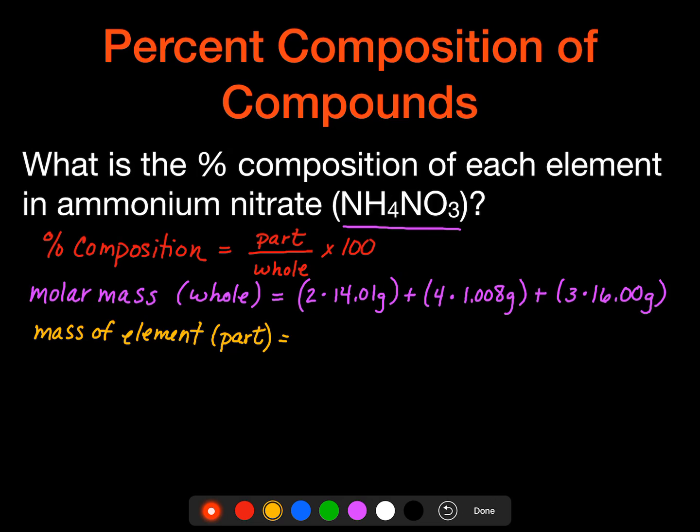Two times 14.01 is going to give us 28.02 plus 4.032 grams for hydrogen. And finally, we're going to add oxygen, which is going to be a total of 48.00 grams. This first one is representing nitrogen, the second one is representing hydrogen, and the last one is representing oxygen. So if I total all of those up, I get a molar mass of 80.05.